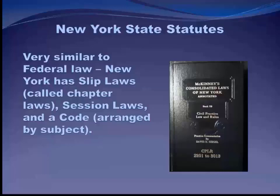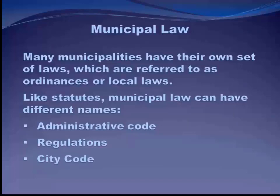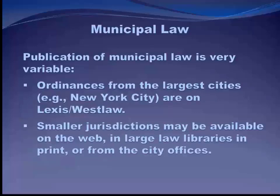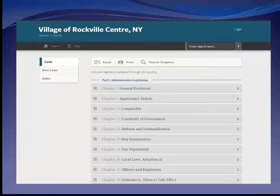Going further down the chain, there are municipal laws. Many municipalities have their own set of laws referred to as ordinances or local laws. Like statutes, municipal law can have different names — administrative code, regulations, city code — depending on where you are. Some municipal laws you can find online; for instance, New York City's administrative law and code are on Lexis and Westlaw. Smaller jurisdictions may be available on the web or in large law libraries. For example, the village of Rockville Center has its village code on its website, covering everything from general provisions to what your dog can do under chapter 19.